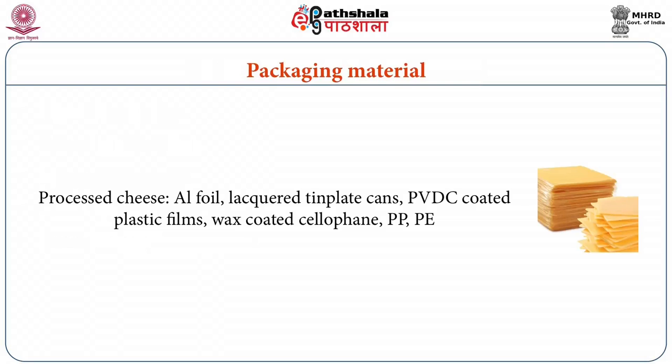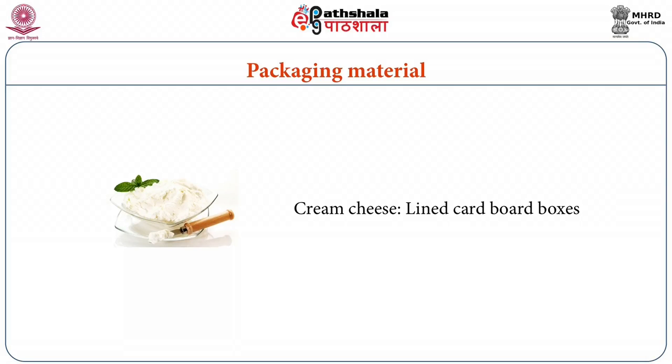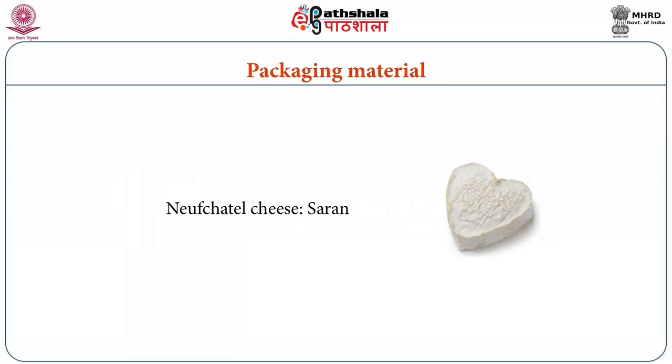Looking at packaging material for cheese, processed cheese is generally packed in aluminium foil in cubes of different shapes. Tin plate cans are also used for 200 gram and above quantities. PVDC coated plastic films are suitable for cheese packaging as they provide good oxygen and moisture barrier properties. Processed cheese is packaged in hot metallic containers and in wax-coated cellophane, aluminium foil, polypropylene, polyethylene, and PVDC materials. Cream cheese is packed in foil-lined cardboard boxes or heat-stable plastic packs. Saran is used as a wrapping material for some cheeses, and air evacuation and gas flushing packaging is used for coated cheese.